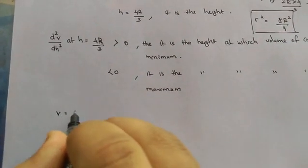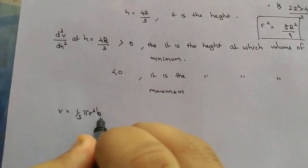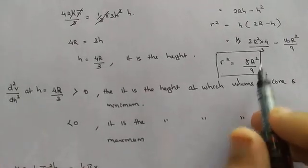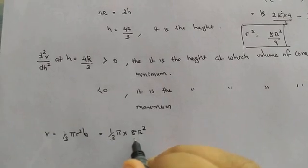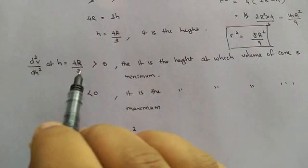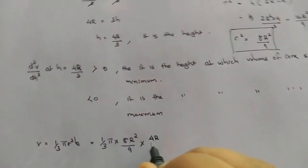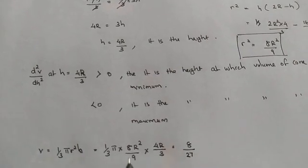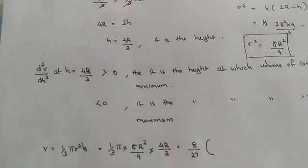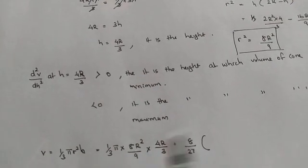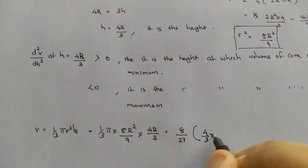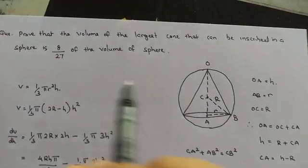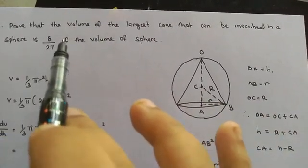The maximum volume of the cone is V equals 1 by 3 pi r squared H. Substituting r squared equals 8R squared by 9 and H equals 4R by 3, we get V equals 1 by 3 pi times 8R squared by 9 times 4R by 3, which simplifies to 8 by 27 times 4 by 3 pi R cubed — that is, 8 by 27 of the volume of the sphere. Hence the volume of the largest cone inscribed in a sphere is 8 by 27 of the volume of the sphere.